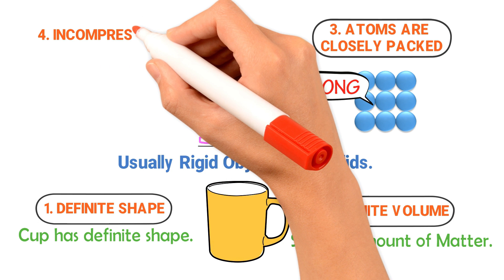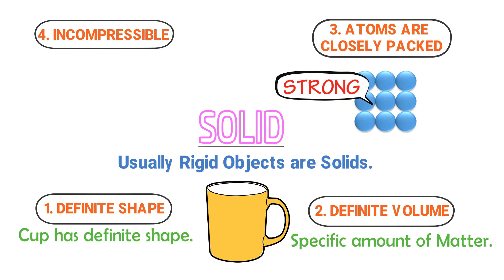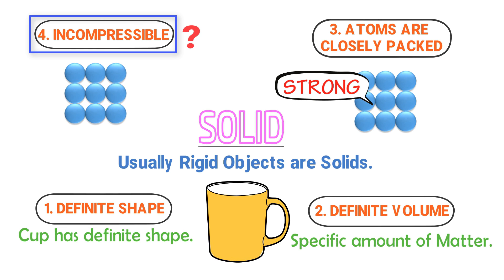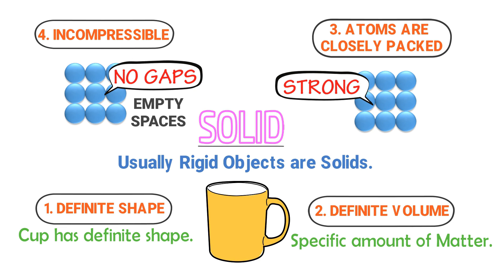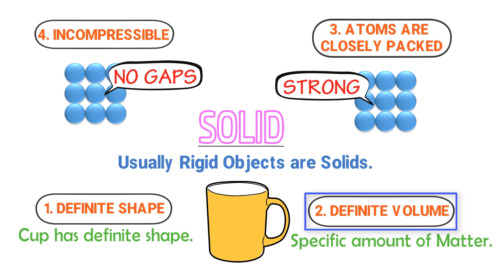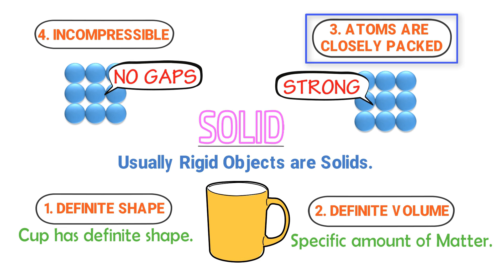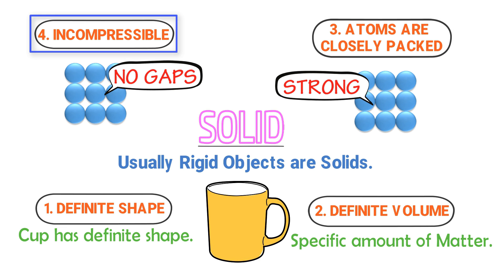Fourthly, solids are incompressible. If someone asks you why solids are incompressible, your answer should be: the atoms or molecules of solids are closely packed together — there is no gap or empty space between the molecules of solids. Thus, you cannot compress these molecules of solid, and that's why we say solids are incompressible. Therefore, remember these four properties of solids: definite shape, definite volume, molecules closely packed together, and incompressible.